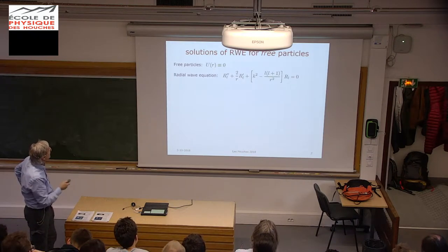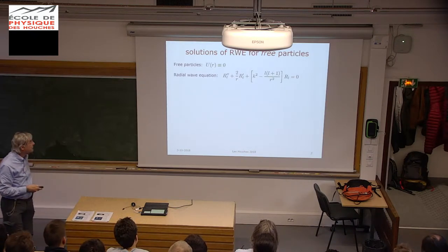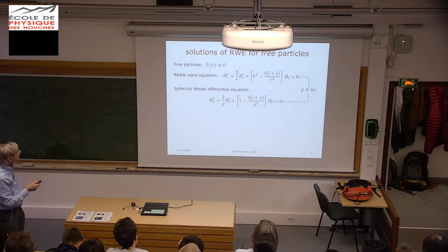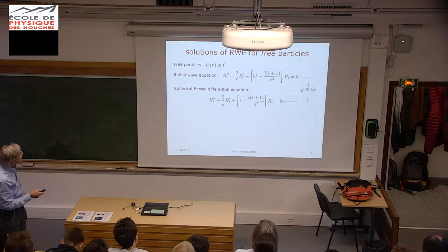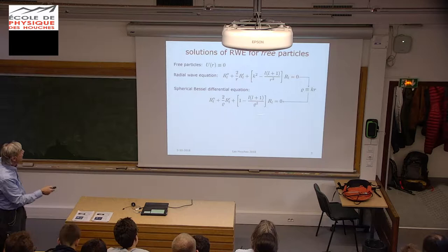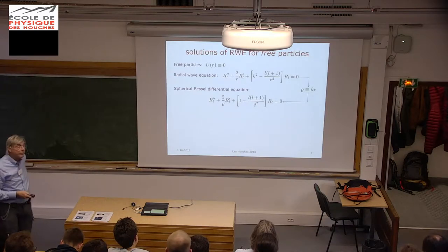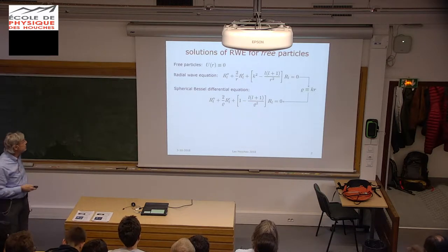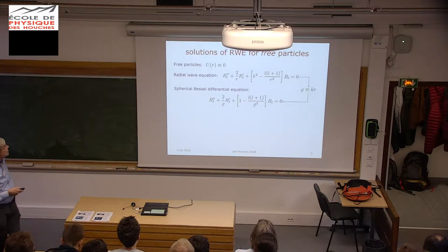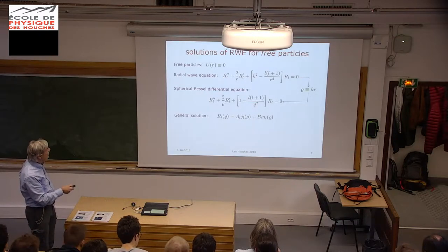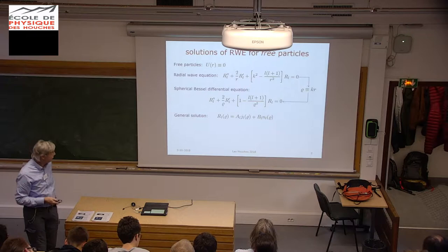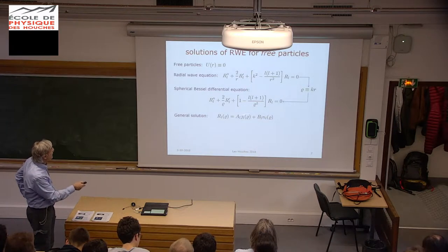What we were solving was the radial wave equation. If you take this radial wave equation, you can rewrite it in this form. You divide by k squared, you make this substitution, and then you end up with a very well-known differential equation, which is the spherical Bessel differential equation. So for these free particles, we know the solutions.